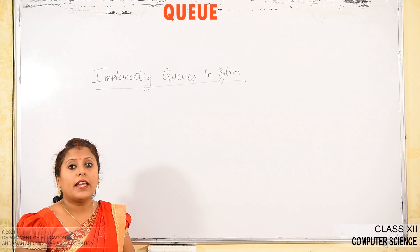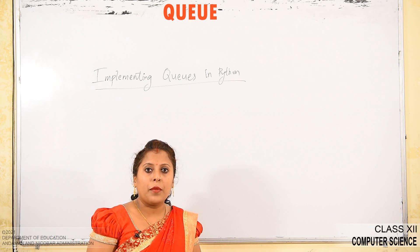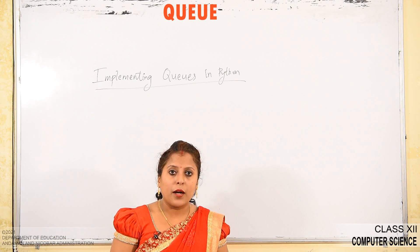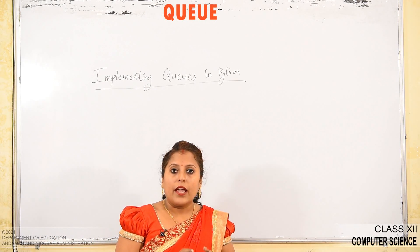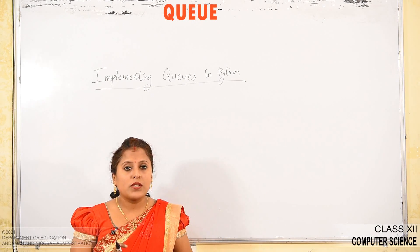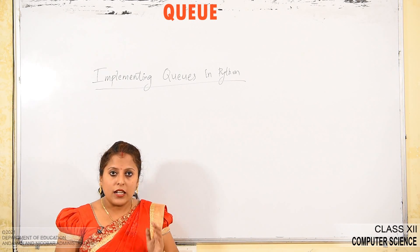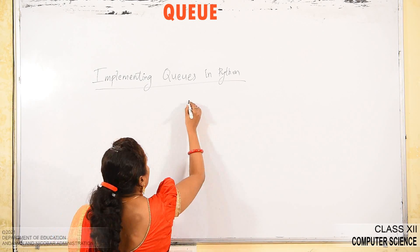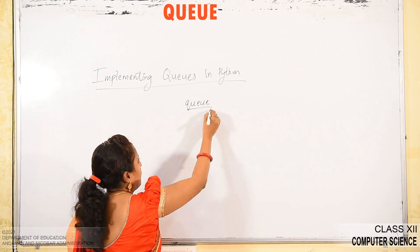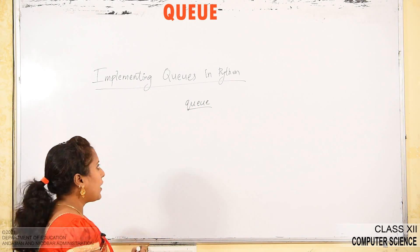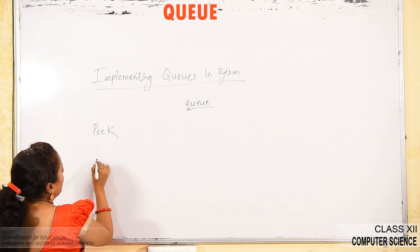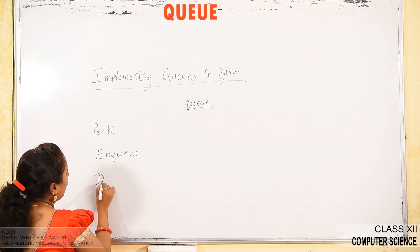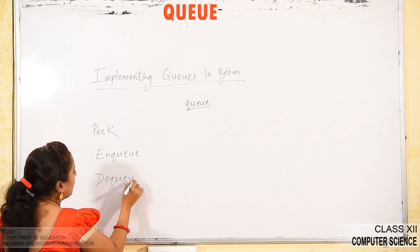Next, we are going to see implementing queues in Python. Just like with stack, where we used a list to implement it, here also we use lists to implement queues in Python. Suppose the list name is Q. The operations we can perform are: peak, enqueue (NQ), and dequeue (DQ).